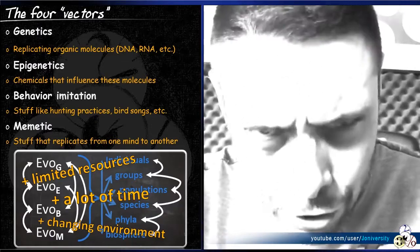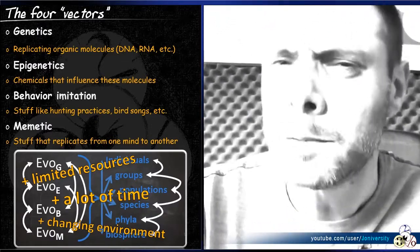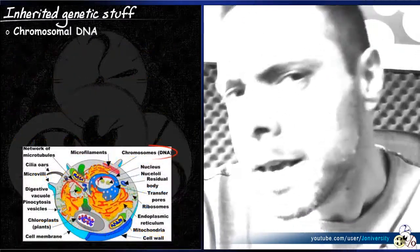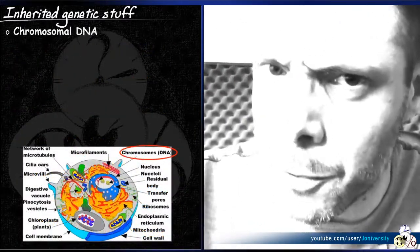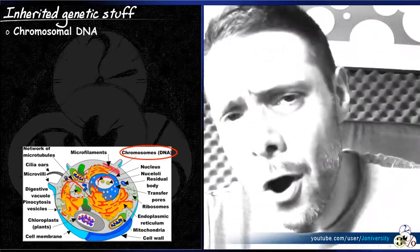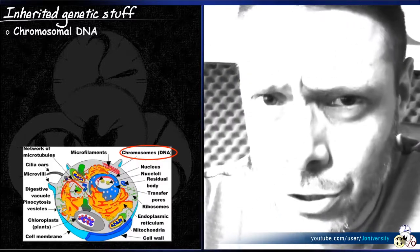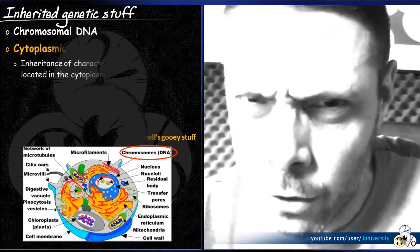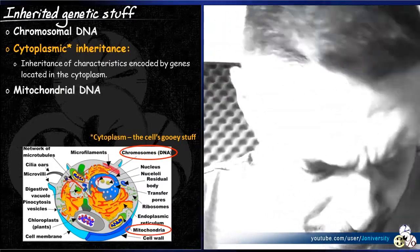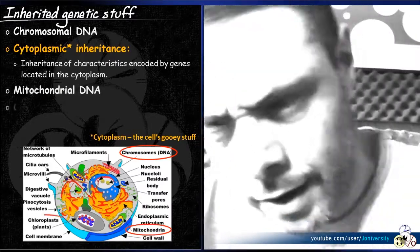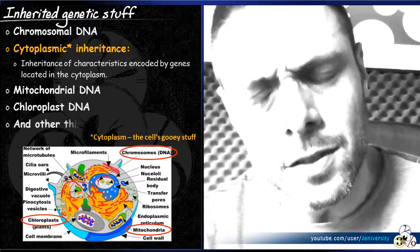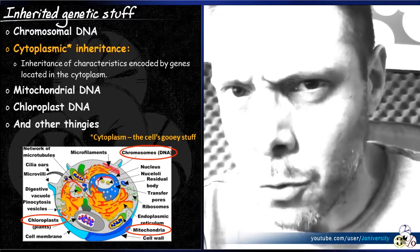Let's dispel the first myth. The DNA in your nucleus isn't the only genetic information passed on through generations. You have a multitude of non-nuclear genetic information — mostly stuff floating around in your cytoplasm, like the DNA in the mitochondria, or if you're a plant, the DNA in the chloroplast. And you've got all sorts of other bits and pieces that replicate independently of the chromosomes.